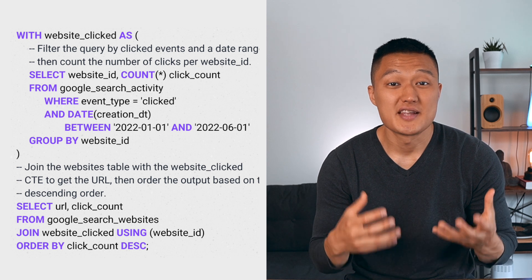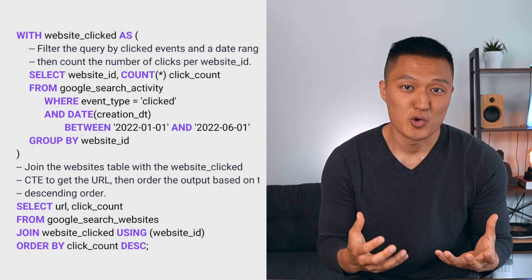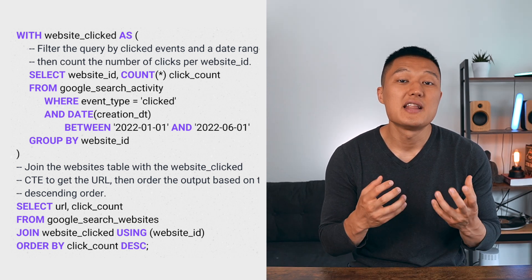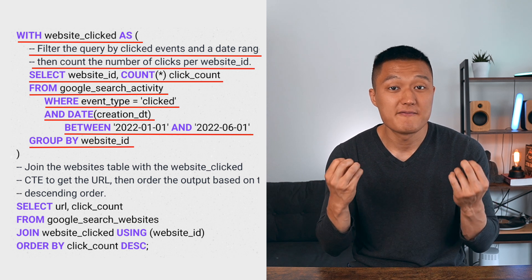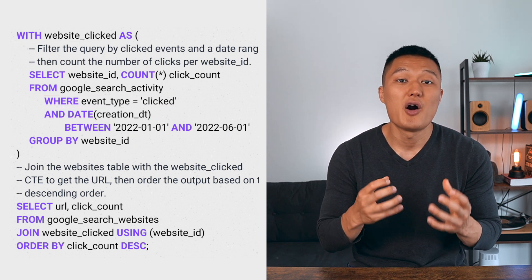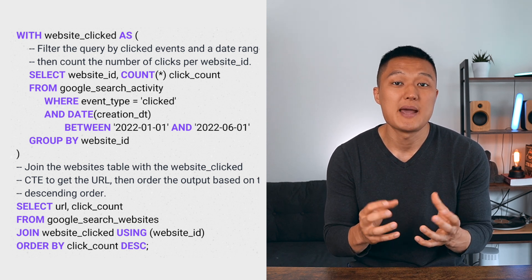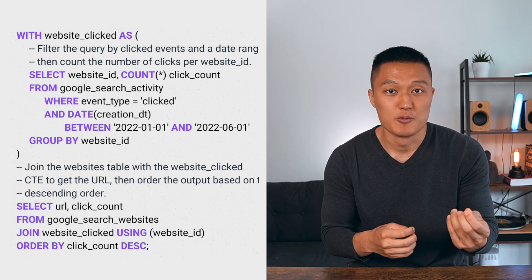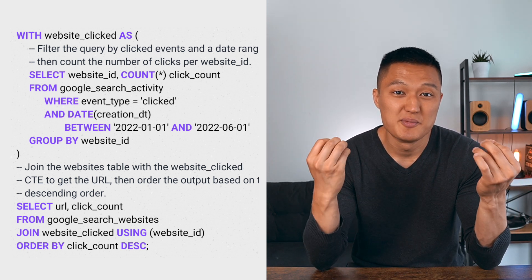Right off the bat, the query is a lot more readable because instead of using nested subqueries, I'm using CTE to break it down. And unlike the previous solution, instead of joining the website and activity tables first and then applying a filter using IN, I filter on the activity table first, then join that smaller table to the website table, then apply GROUP BY. As a bonus tip, I also add comments to make the query more readable.